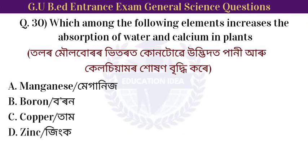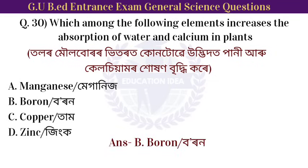Next question: which among the following elements increases the absorption of water and calcium in plants? Option: boron. Boron increases the absorption of water and calcium in plants.